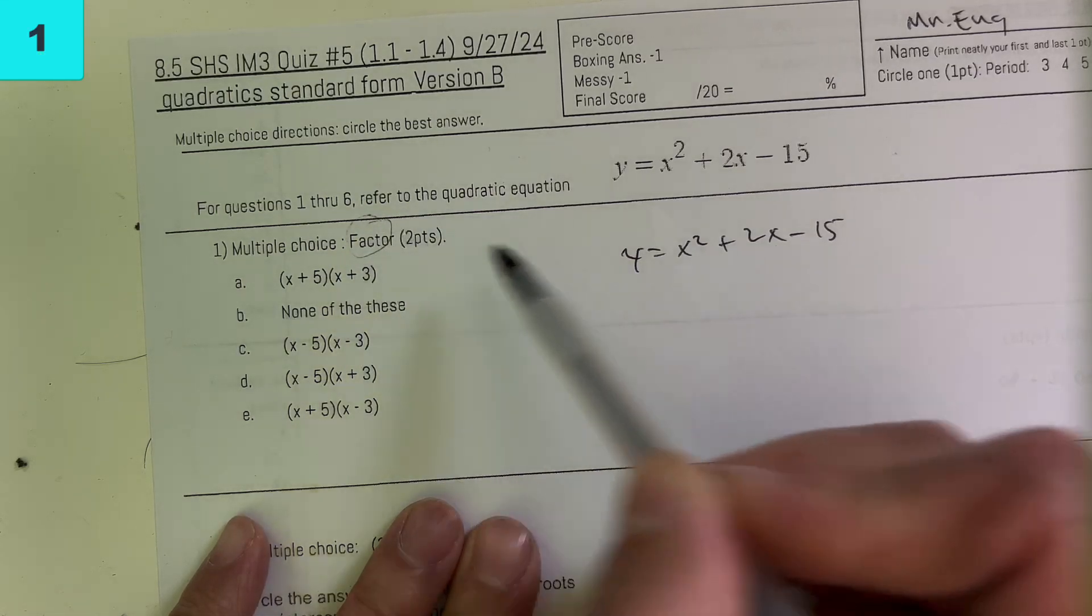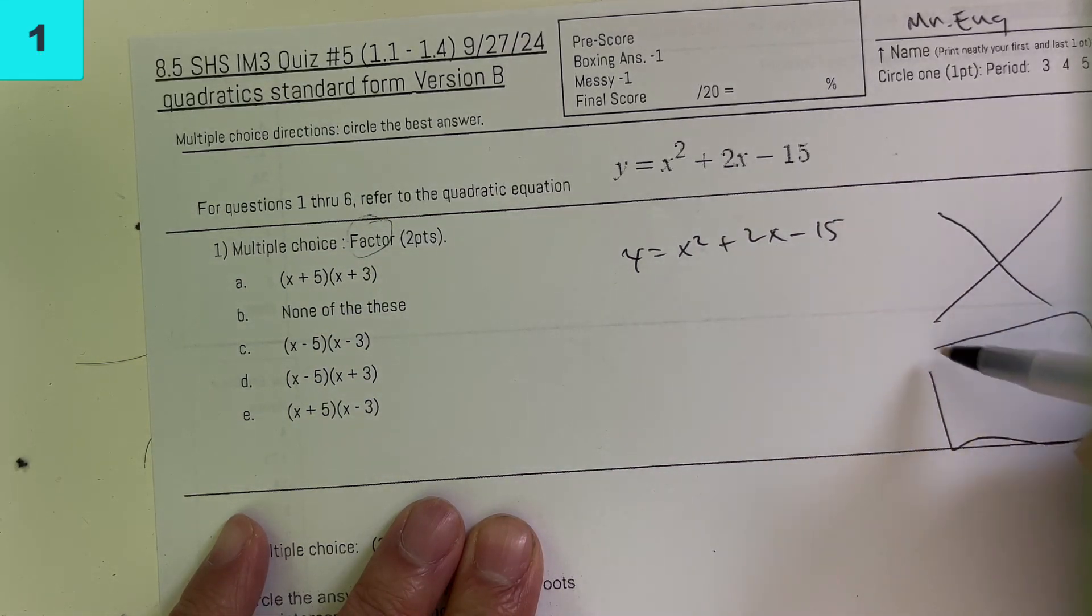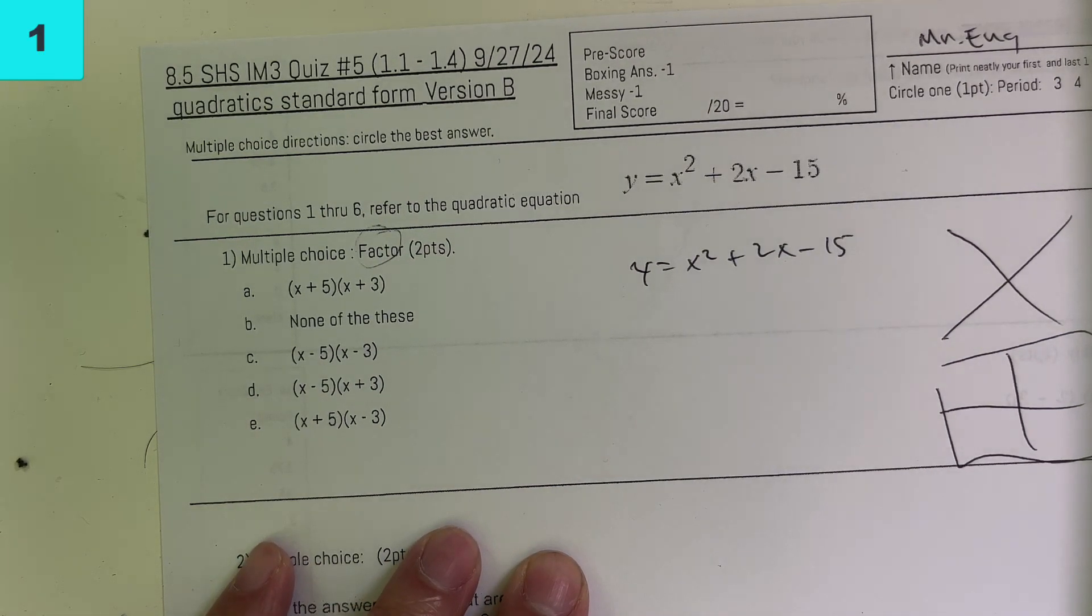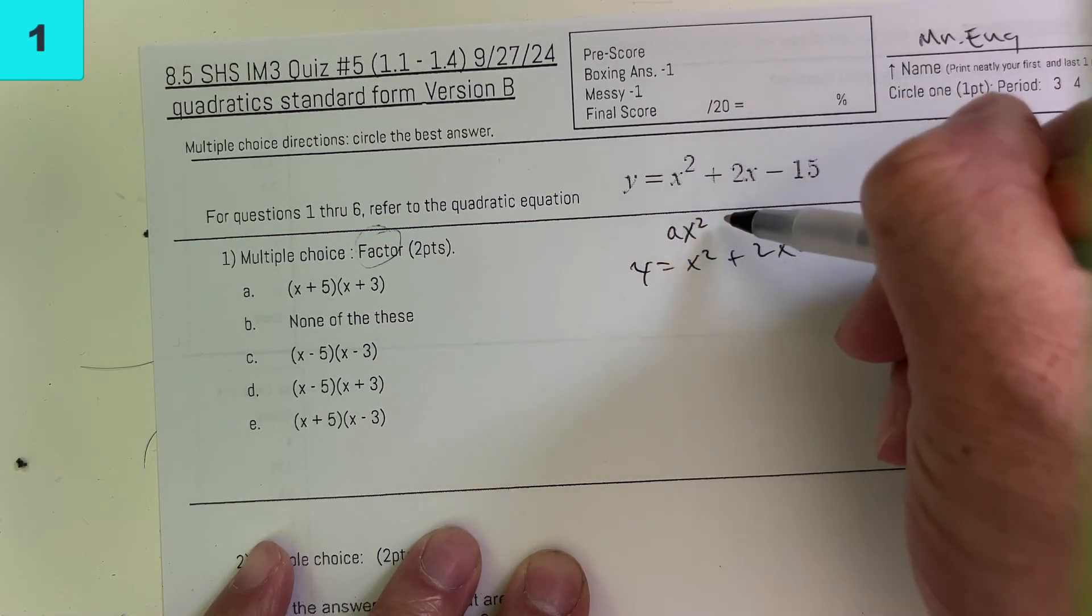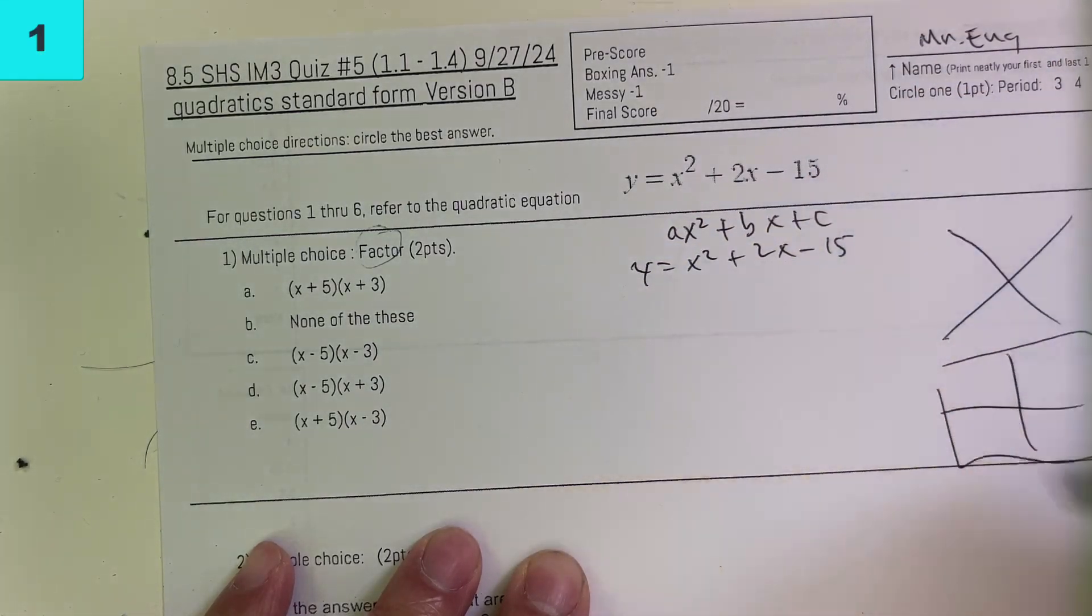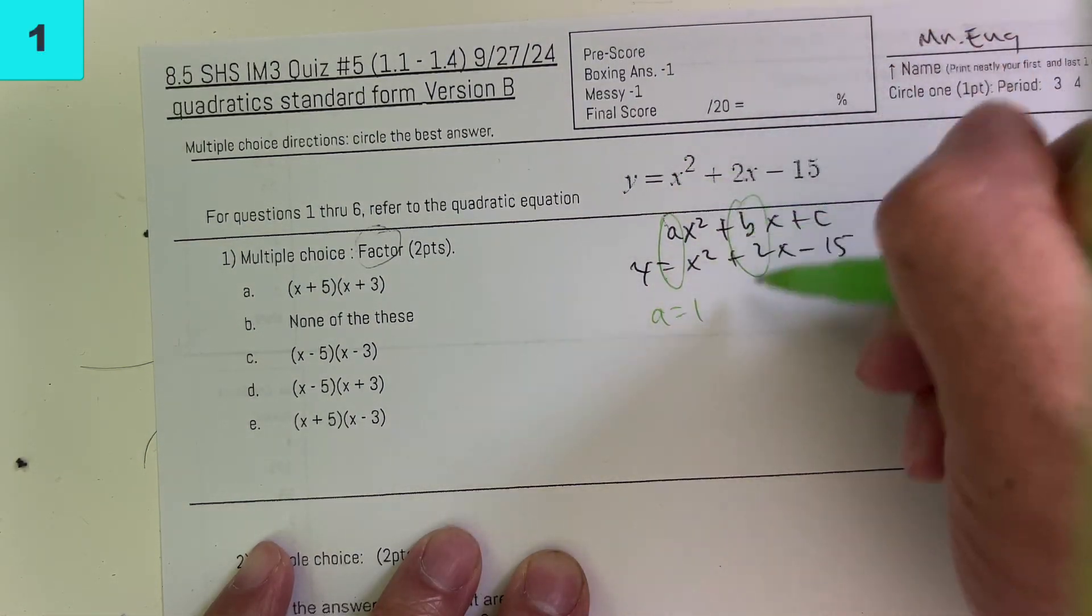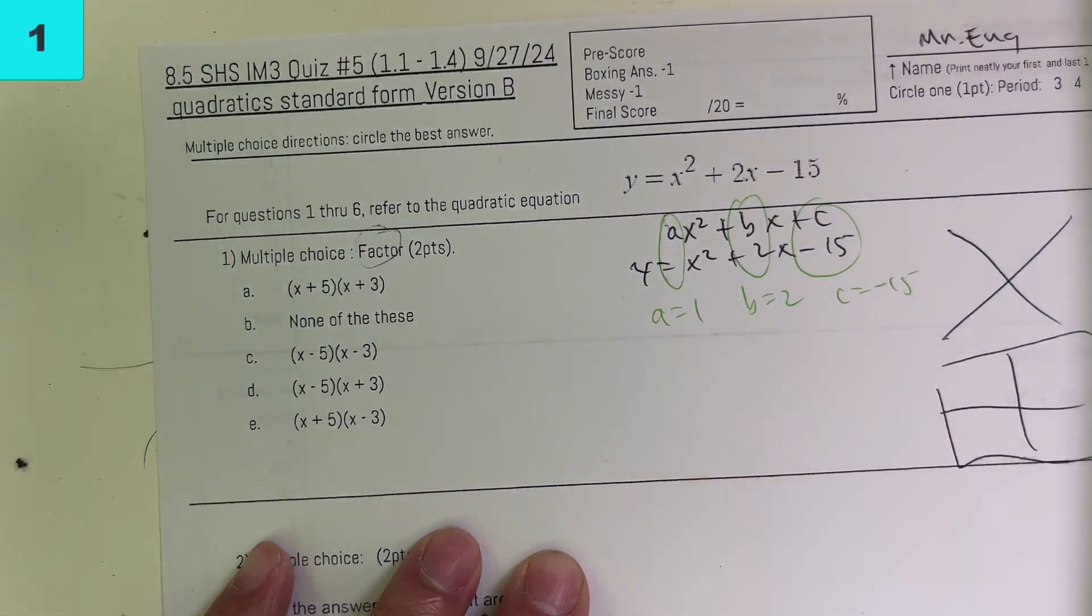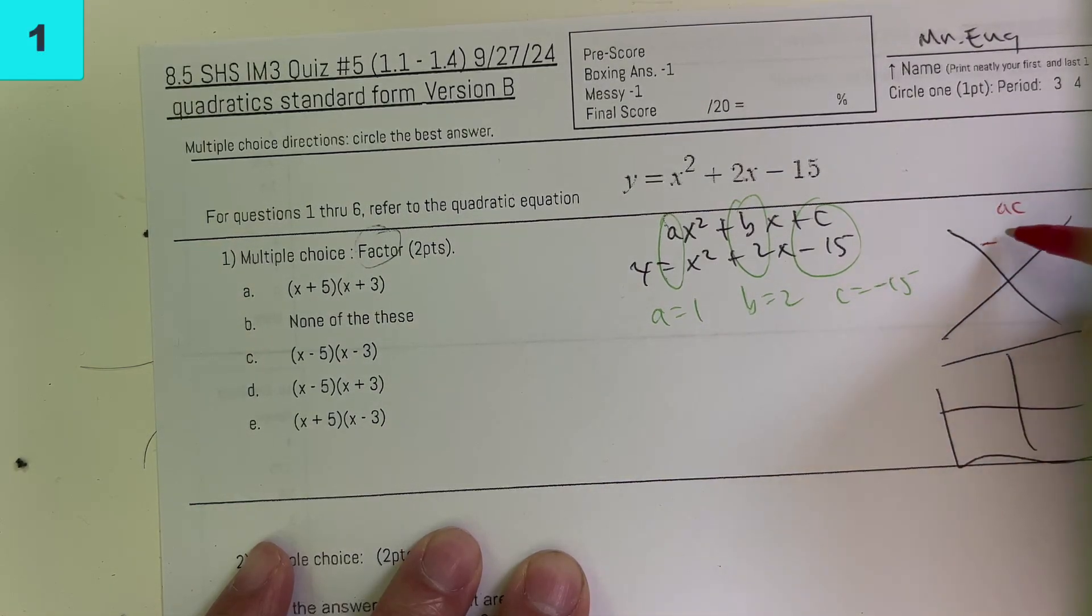This says to factor. So we've been using the Xbox. You'll notice that there is no greatest common factor in this problem. I'm going to write standard form above it. And then we can identify that a is 1, b is 2, c is negative 15. A times c is negative 15. My b value is 2.